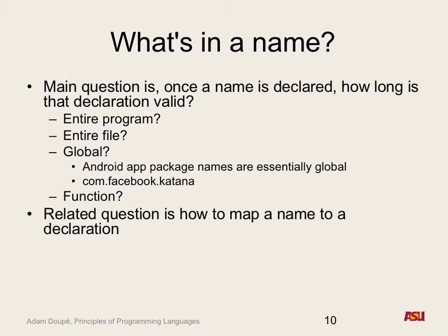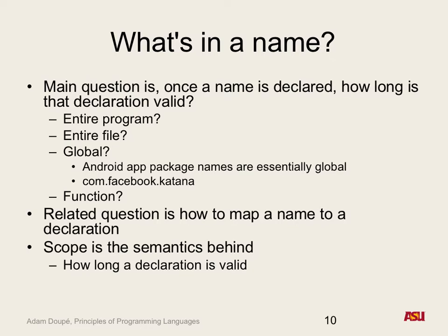The related question has two sides of the same coin. One: how long is a name valid? If you declare something in C in a block, it's accessible throughout that block. The reverse: when you see the use of a variable like 'foo', how do you map that usage to a declaration? How do you know whether foo is an integer or a string? This is scope — the semantics behind how long a declaration is valid and how to resolve a name.